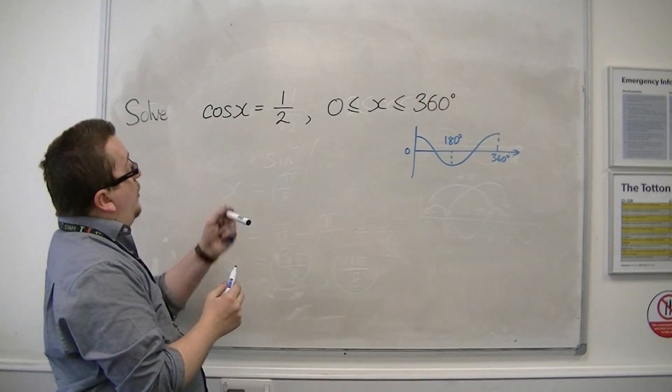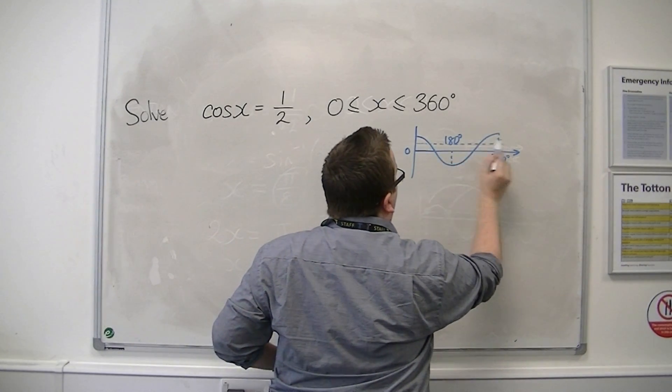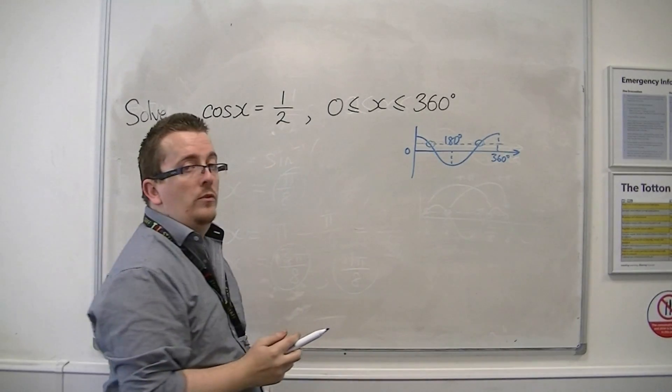Because we're solving cos x equals 1 half, 1 half is here, so we would be expecting two solutions between 0 and 360.